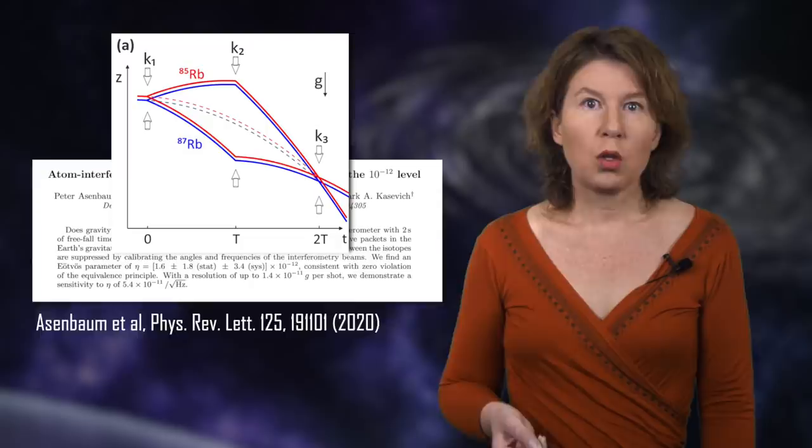You can make your life even easier by looking for a difference between two objects that are very similar except for their mass, like two different isotopes of the same atom. This has been done most recently by a group in Stanford California who looked for a difference in how two isotopes of rubidium fall in the gravitational field of Earth.